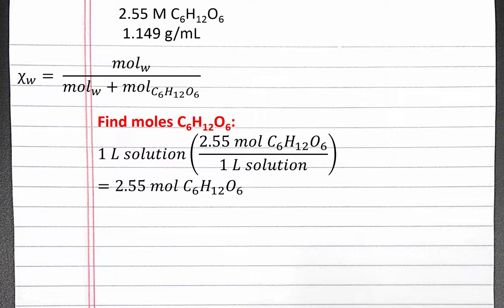Next, we'll need to find moles of water. In order to do this, we'll need to use the equation: mass of solution equals mass of water plus mass of glucose. So we'll need the mass of glucose to find the mass of water and ultimately the moles of water. So for convenience, we'll make that calculation here.